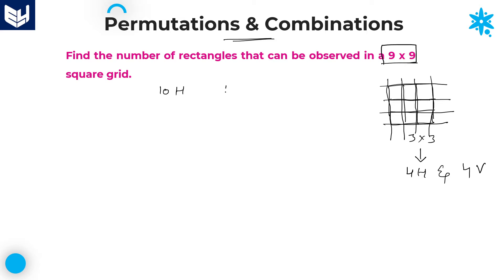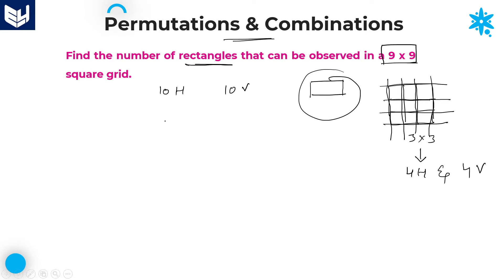These 10 vertical lines are perpendicular to the 10 horizontal lines. To form a rectangle, we need two horizontal lines and two vertical lines. So selecting two horizontal lines out of 10 is 10C2, and selecting two vertical lines out of 10 is also 10C2. The total number of rectangles is 10C2 multiplied by 10C2.